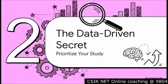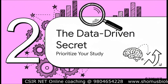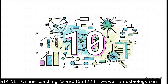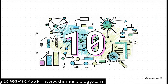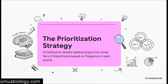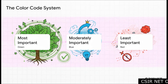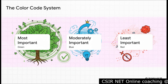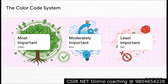So how do we know which topics to actually focus on? It's not guesswork. We're going to use a data-driven method based on a deep analysis of what the exam is really asking — specifically a careful analysis of the last 10 CSIR Net question papers, focusing on post-COVID exam trends. We're calling this the prioritization strategy: classifying every topic in Unit 2 into one of three tiers based on how often questions have appeared in recent exams. We're using a color code — green for the most important, non-negotiable topics; blue for moderately important topics that give you a competitive edge; and red for the least important topics you can safely spend less time on or even skip.